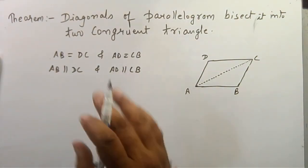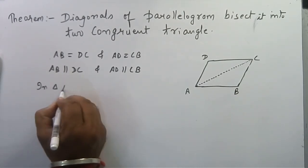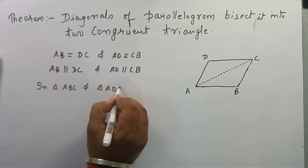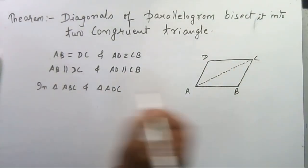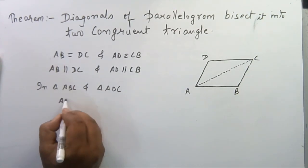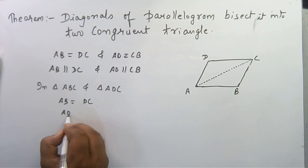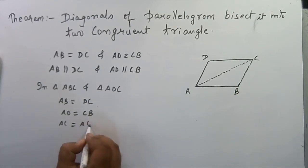for proving this theorem. First, we are considering two triangles: triangle ABC and triangle ADC. Because these are the sides of the parallelogram, AB equals DC (given) and AD equals CB (given). Also, AC is common in both triangles.